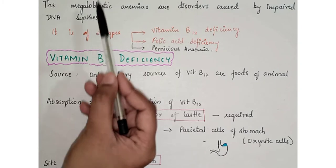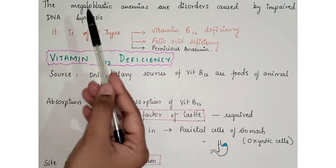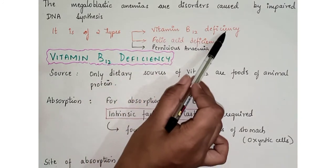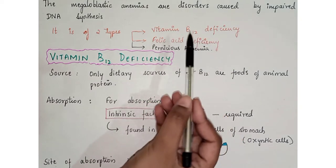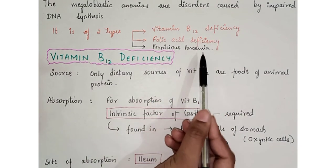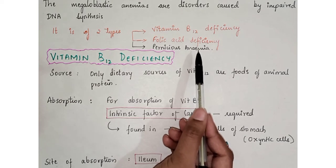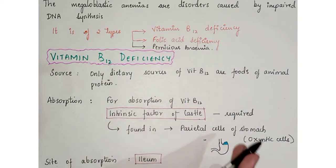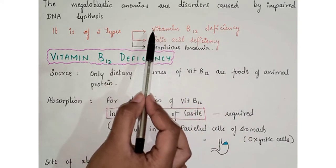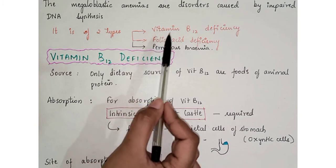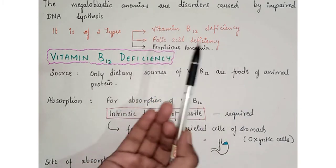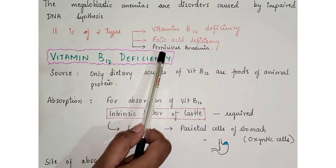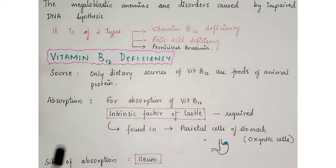Megaloblastic anemias are disorders caused by impaired DNA synthesis. This leads to deficiency problems such as Vitamin B12 deficiency, folic acid deficiency, and pernicious anemia, where the intrinsic factor of Castle is deficient, which in turn leads to Vitamin B12 deficiency. In this video we will learn about Vitamin B12 deficiency, and in the next part we will cover folic acid deficiency and pernicious anemia.